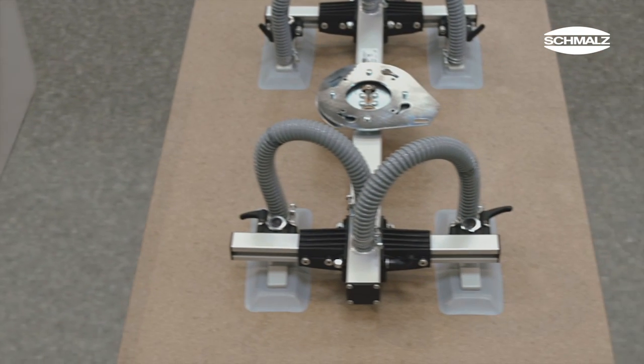Through a variety of grippers, the tube lifter can be adapted to the current workpiece, whether cardboard boxes, pallets, cabinets or sheets.